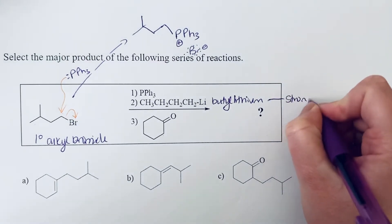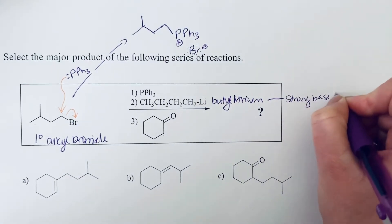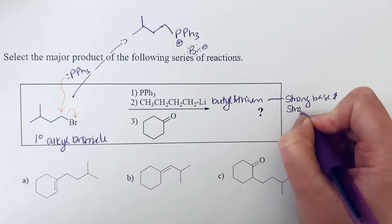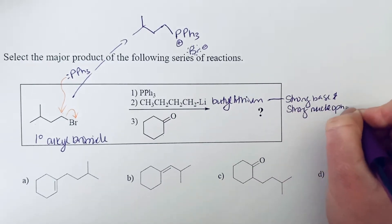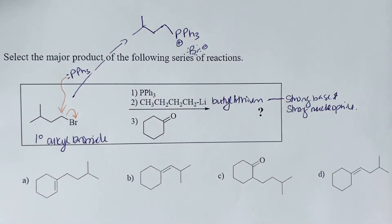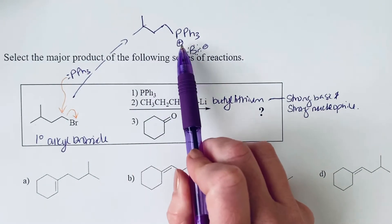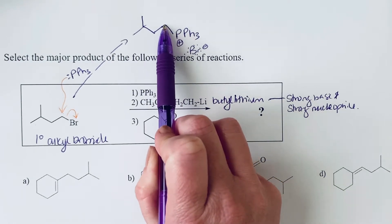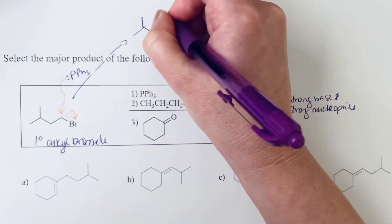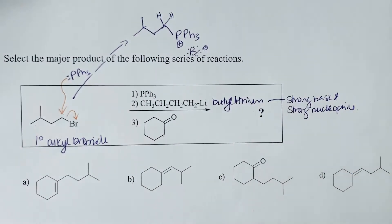This is a strong base and a strong nucleophile. If you have a competition between this acting as a base or a nucleophile, that acid-base chemistry is going to take place faster. With this positively charged phosphorus, it does make the hydrogens on the next door carbon atom more acidic, so this is going to act as a base in this case.